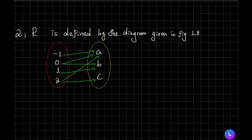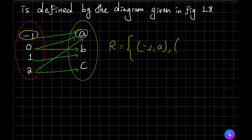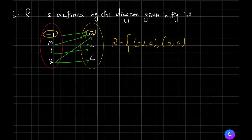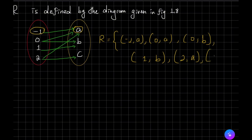Number two: R is defined by the diagram given in figure 1.2. Find the inverse relation. By the diagram, the relation contains: (-1, a), (0, a), (0, b), (1, b), (2, a), (2, c). These are the ordered pairs from the diagram.